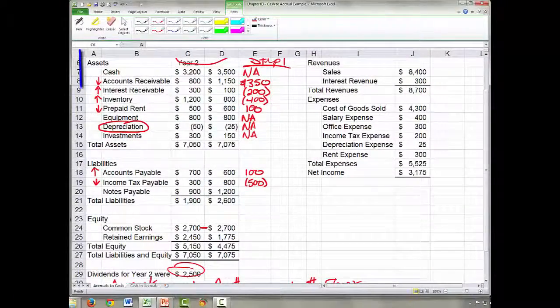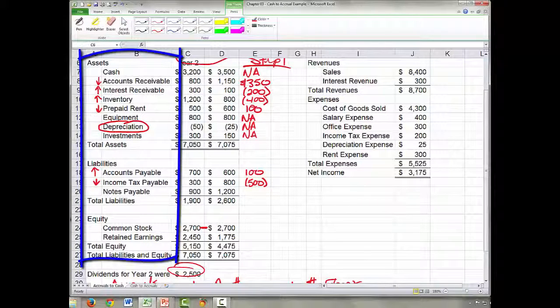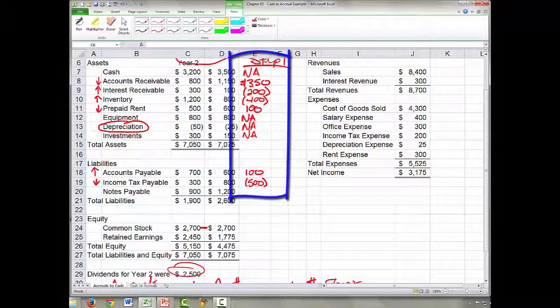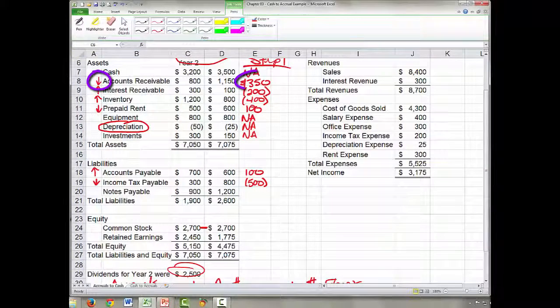Step one is to go through the balance sheet accounts and calculate the change in cash from that change in a balance sheet account. So as accounts payable went down, cash goes up because somebody probably paid me.